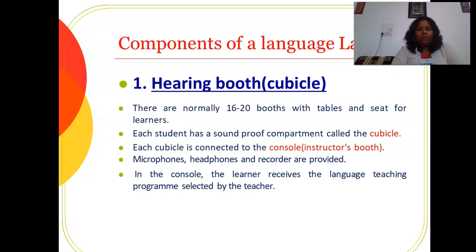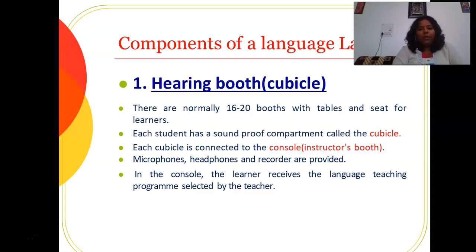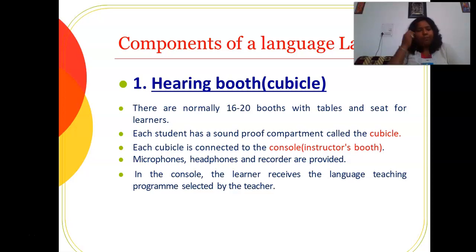What are the components — how is a language lab set up in a school? Three things need to be considered. First is the hearing booth: there must be 16 to 20 booths with tables, seats, and recording instruments or computers. All these must be soundproof compartments called cubicles — hearing booths where the student listens to what is being sent to them. Each cubicle is connected with the console. Every student is provided a microphone, headphone, and recorder. Through the console, the learner receives the language teaching program designed and selected by the teacher.